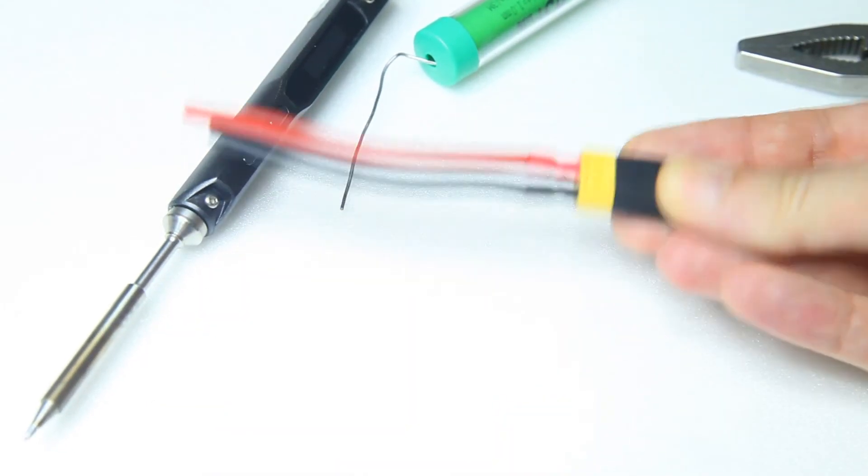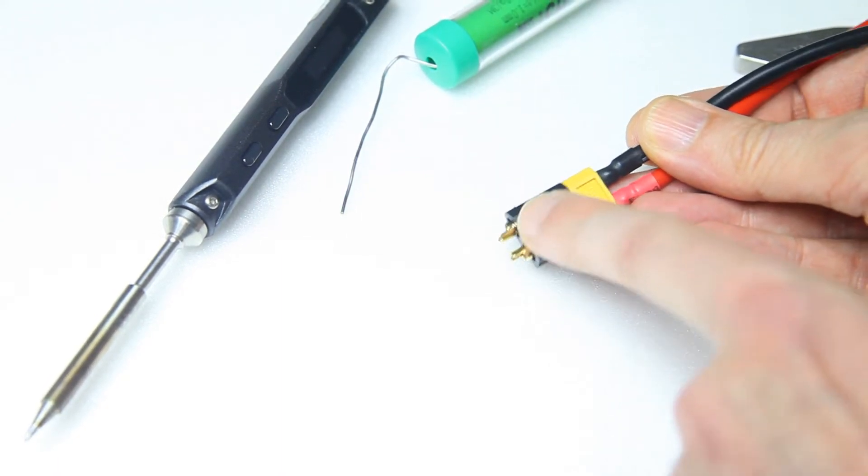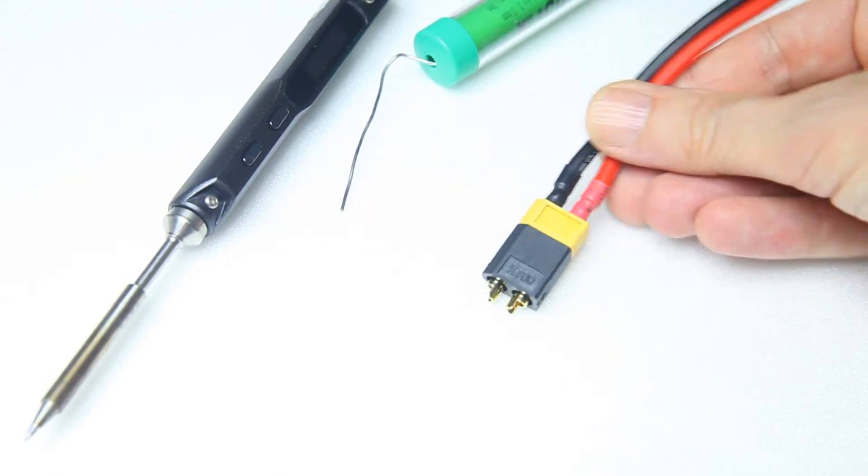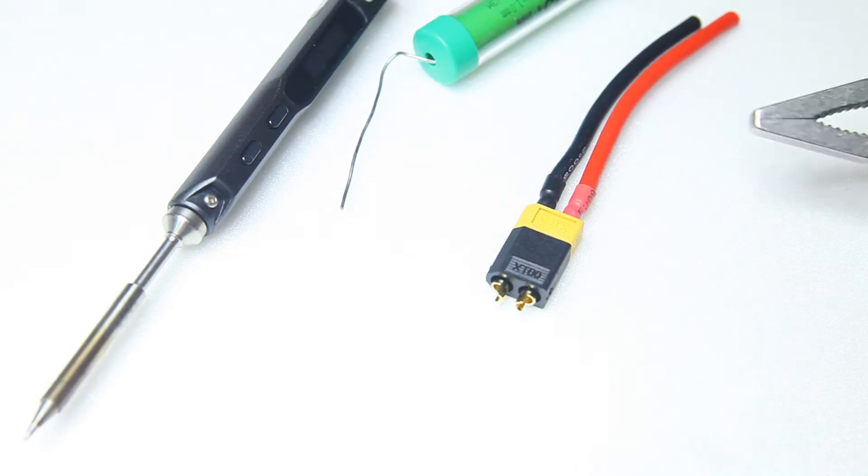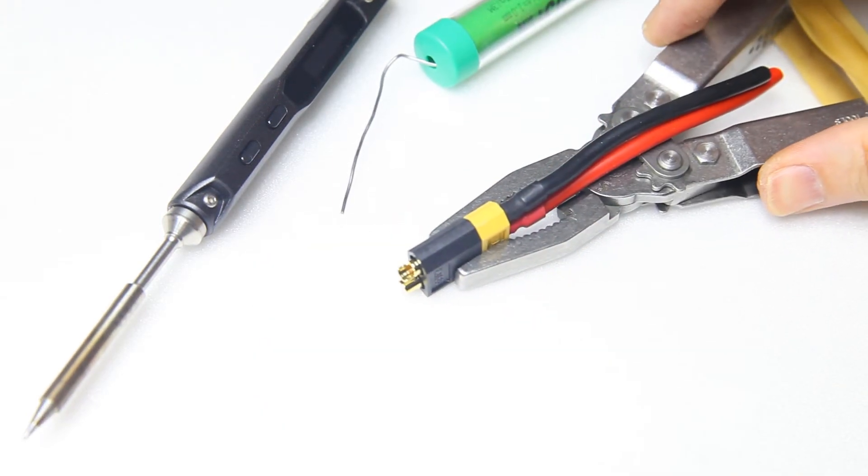Okay so we've got, in this case we want to solder up this black version of the XT60. And the next thing I do is clamp it in my pair of pliers. There.